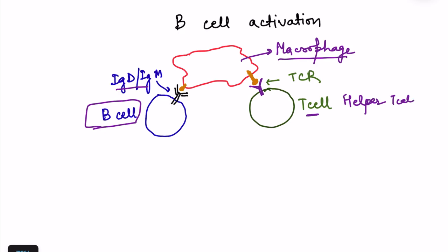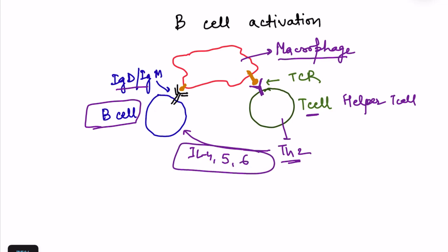When the helper T cell differentiates into the TH2 subset, it releases lymphokines — interleukin 4, interleukin 5, and interleukin 6 — which cause activation of the B cell. These are also known as B cell growth factors or B cell stimulating factors. For B cell activation, two things are required: antigen presentation and release of lymphokines by helper T cells.